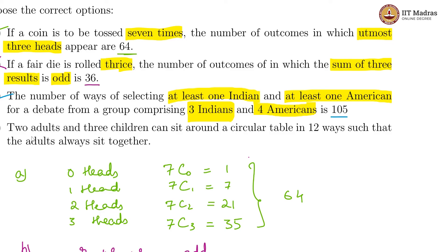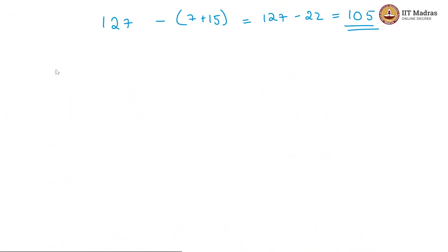Now, let us look at the last option, which is two adults and three children can sit around a circular table in 12 ways such that the adults are always sitting together. So, then we have a circular permutation here, there are two adults. Now, these two adults are treated as one entity and then they have C1, C2 and C3 who can sit around them, the three children. So, technically these are four entities totally.